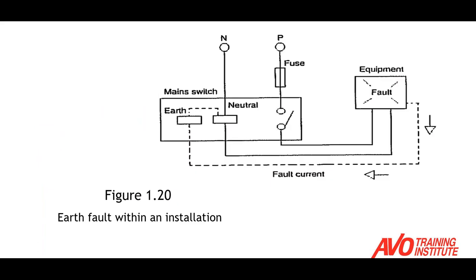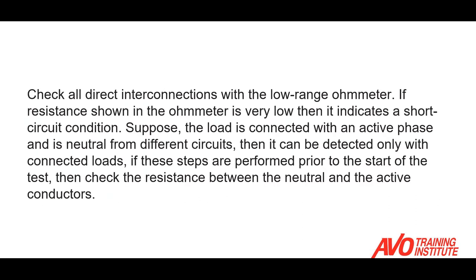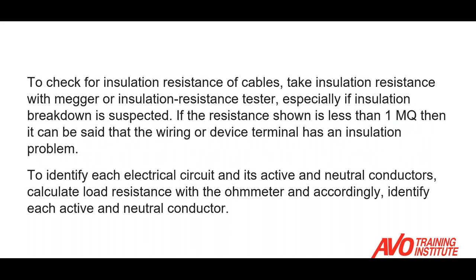A continuity test is useful to detect a short circuit condition. It can help us pick up incorrect termination of wires, insulation breakdown, or any incorrect connection at a field junction box. Before this test, we need to disconnect the neutral link from the circuit and close all contactors and switches, then check all direct interconnections with a low-range ohmmeter. If the resistance reading is very low, we have a short circuit condition. After that, check the insulation resistance of the cable with an insulation resistance test. If the resistance read is less than one mega ohm, then the wiring or device has an insulation problem — though that one mega ohm value may change based on the requirements of your company or installation.